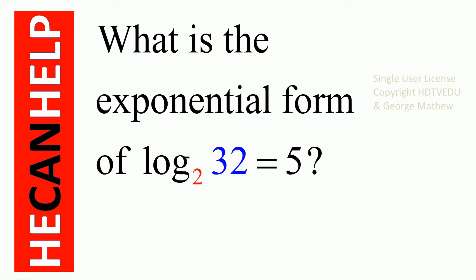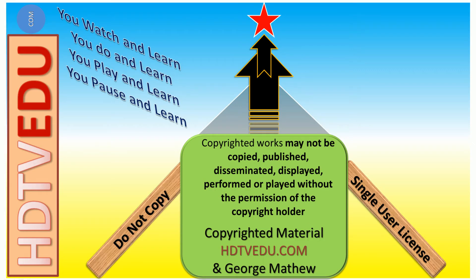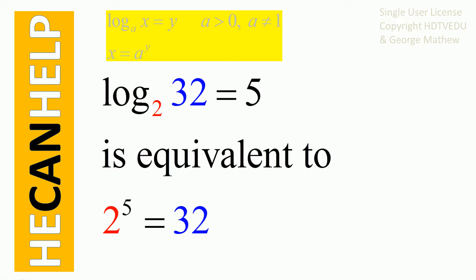What is the exponential form of logarithm to the base 2 of 32 equal to 5? Logarithm to the base 2 of 32 is equal to 5. In some countries they say log 32 to the base 2 is equal to 5. So logarithm to the base 2 of 32 equal to 5 means 2 to the power of 5 equals 32.